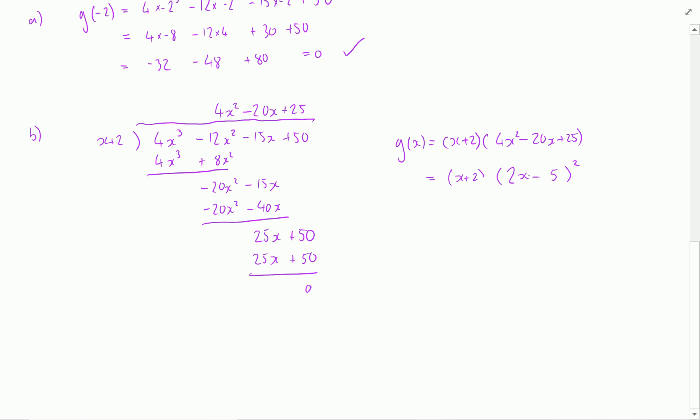And just double checking, twice the product is 2 times 5 which is 10 times 2 is 20 so we're done. So a is 2 and b is negative 5.